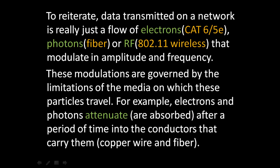To reiterate, data transmitted on a network is really just a flow of electrons — as with Category 6 and 5e — or photons, such as fiber, or RF when using 802.11 wireless, that modulate in both amplitude and frequency. These modulations are governed by the limitations of the media in which these particles travel.